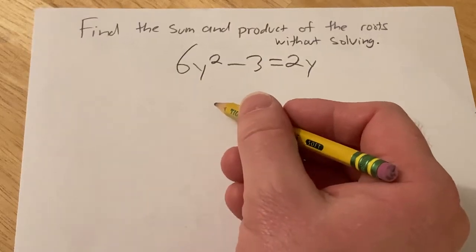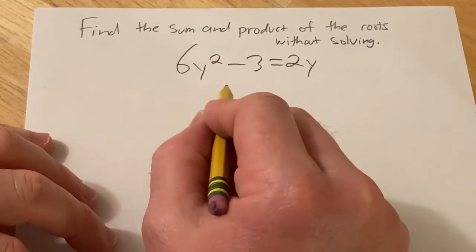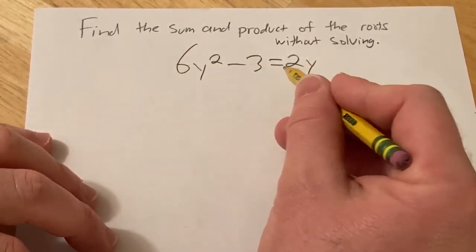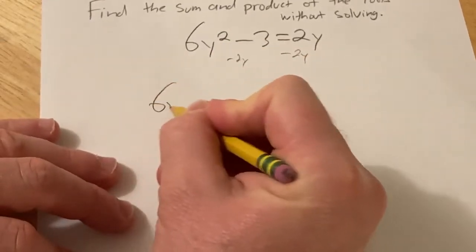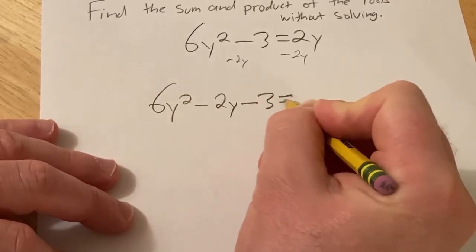Hi, in this problem we're going to find the sum and product of the roots of this equation without solving for y. So we'll start by setting it equal to 0, so I'll subtract 2y from both sides. So we have 6y squared minus 2y minus 3 equal to 0.